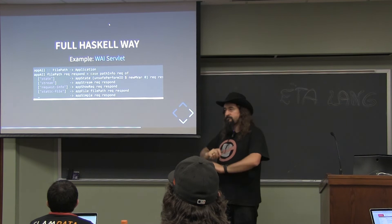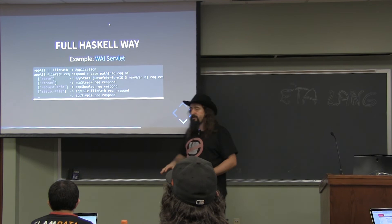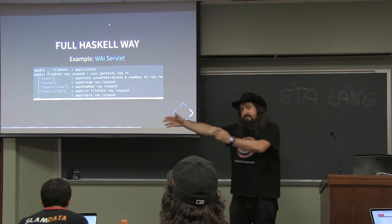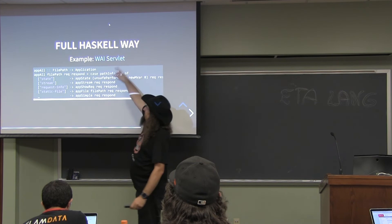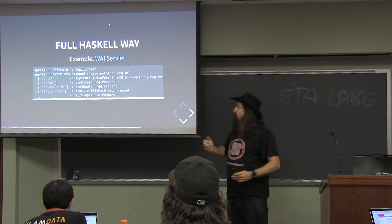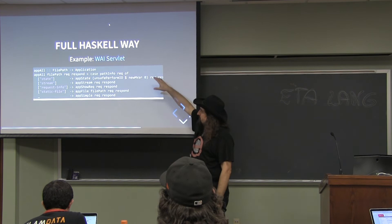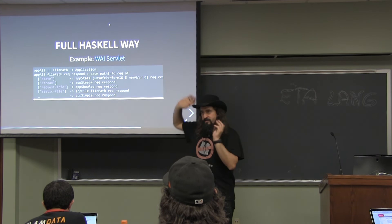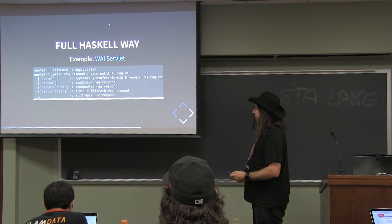There are different flavors of how you can do interoperability. First is: completely ignore Java. Just do everything in Haskell. What we typically do on the Java side is server-side programming — servlets, which are basically a procedure that takes a request and returns a response. What is WAI servlet? It's a wrapper written so that you can use your Haskell functions as a servlet. If you've written something in Haskell and want to expose it on Tomcat, this servlet is a wrapper and you're done — sticking to Haskell.